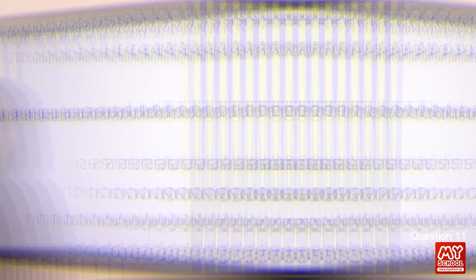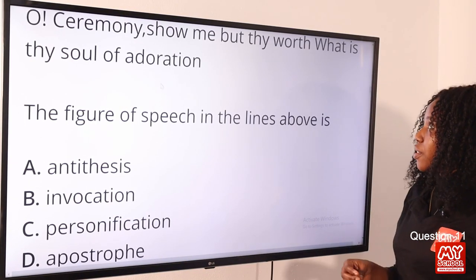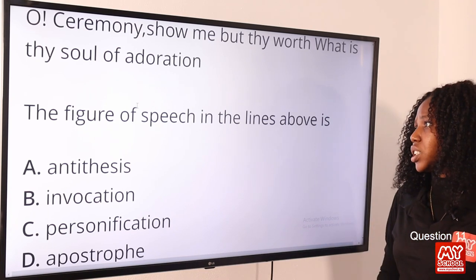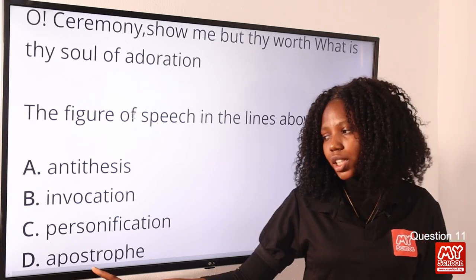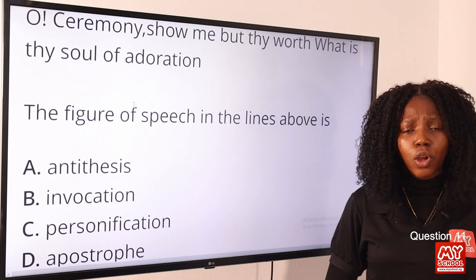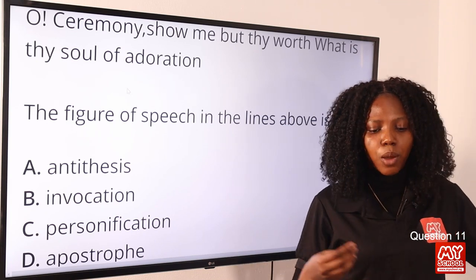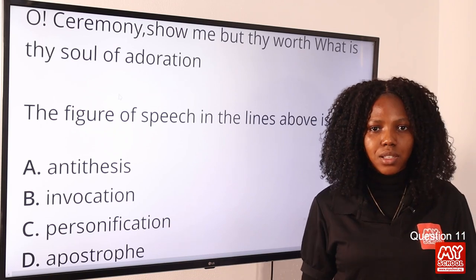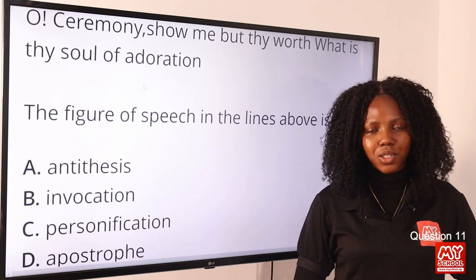Question 11: 'All ceremony, show me what thy worth, what is thy soul of adoration' — the figure of speech in these lines is apostrophe. Option D is the correct answer. Apostrophe addresses a thing, object, idea, or concept as though it is physically present.